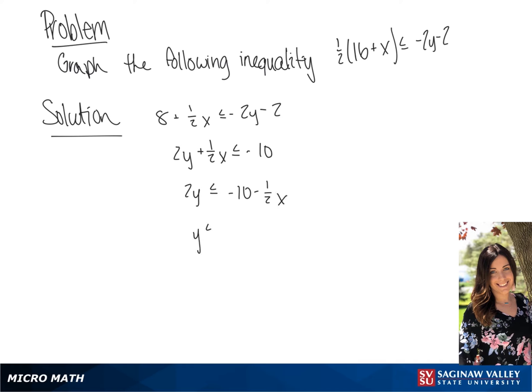We're going to divide both sides by 2, giving us y is less than or equal to negative one-fourth x minus 5.